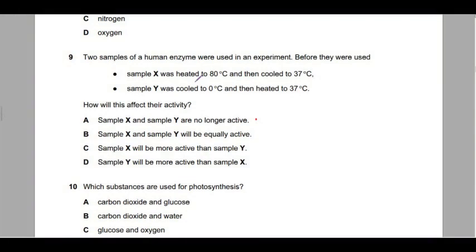Alright, so let's get started. Question one says: two samples of a human enzyme were used in an experiment. Before they were used, sample X was heated to 80 degrees Celsius then cooled to 37 degrees Celsius. Sample Y was cooled to zero degrees then heated to 37 degrees Celsius. How will this affect their enzyme activity?